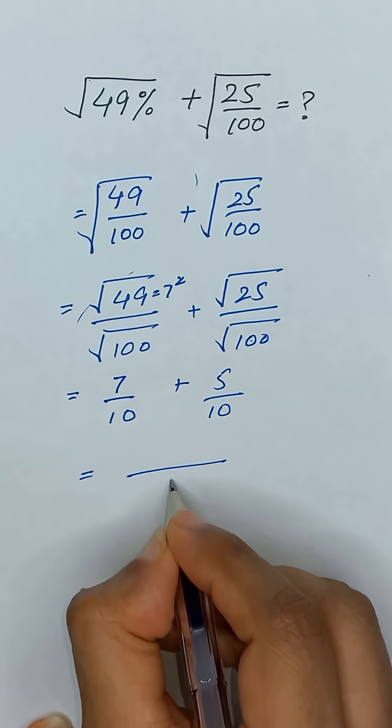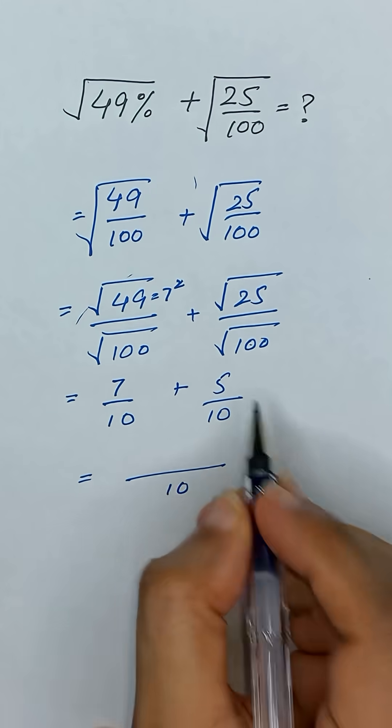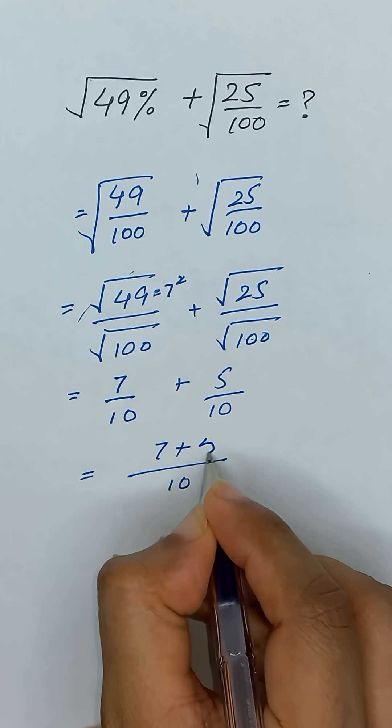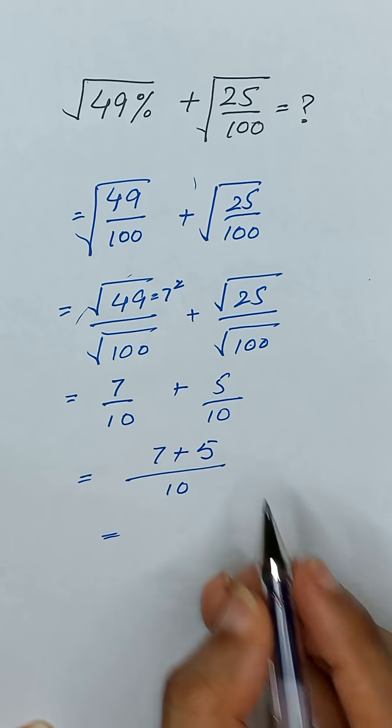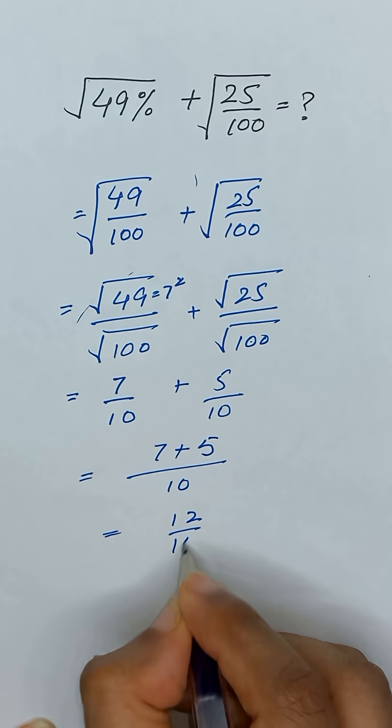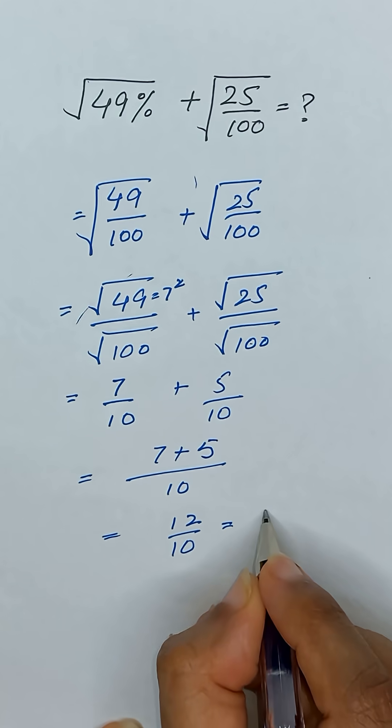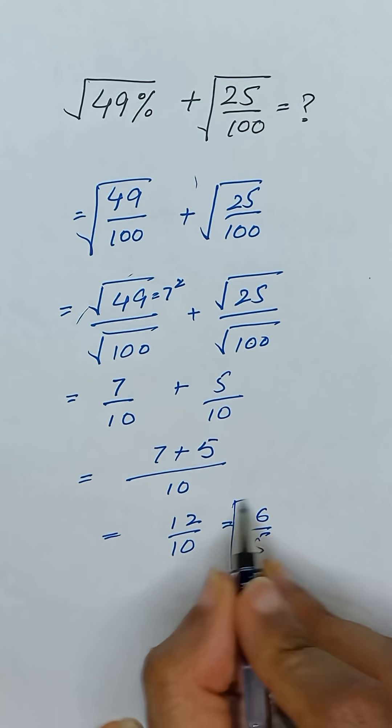Now we have same denominator, so LCM will be 10, so we will add our numerator. So 7 plus 5 will be equal to 12 divided by 10 and it will be equal to 6 divided by 5. Thanks for watching.